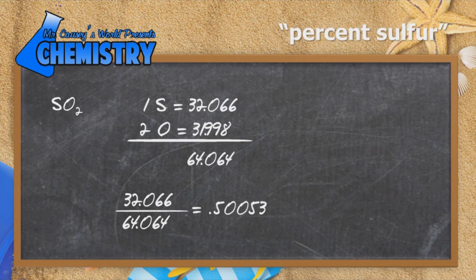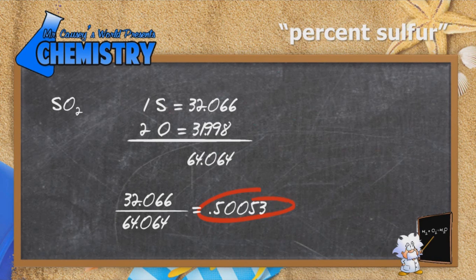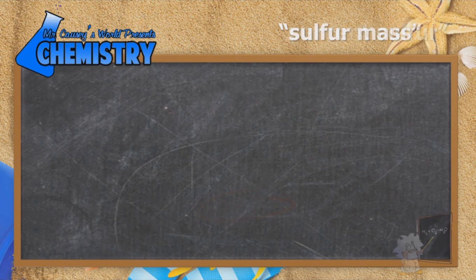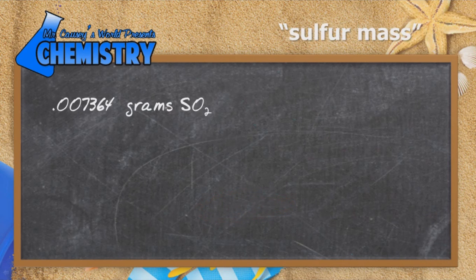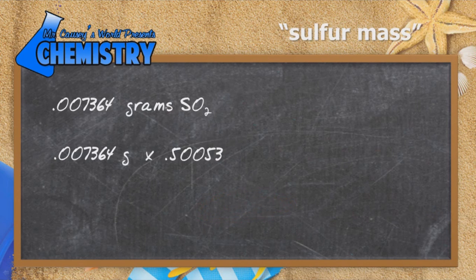You'll note that sulfur dioxide by mass is basically 50% sulfur. I'm going to leave it as a decimal because the percent can't be used in the next part anyway. So let's take our grams and multiply it by our ratio, and we get 0.003686 grams of sulfur. There's our answer.